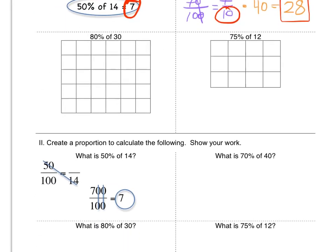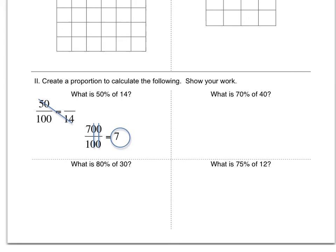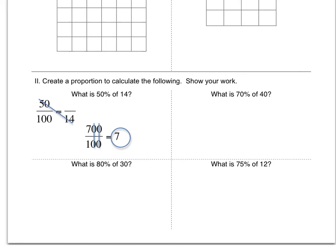On part 2, a little bit lower here, create a proportion to calculate the following. Show your work. What is 50% of 14? So now this is where we're doing the math part of it and not just the shading. So 50% we write as 50 over 100 equals some number out of our total of 14. So 14 goes on the bottom because we're comparing some other number to 14, just like we're comparing 50 to 100.